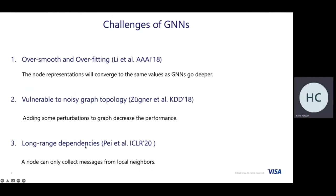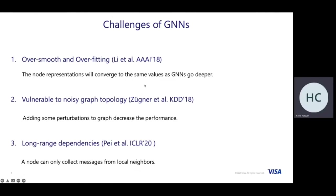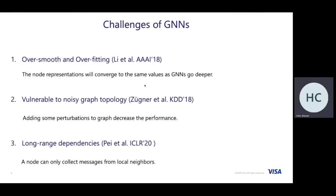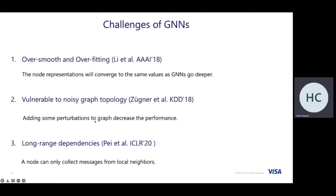There are still some challenges for GNN. The first challenge is over-smoothing and over-fitting. The node representations will converge to the same values as the GNN goes very deep. This is a serious problem in bipartite graphs. The second challenge is that adding perturbations to the graph causes GNN performance to drop quickly, meaning the robustness of GNN is also weak.